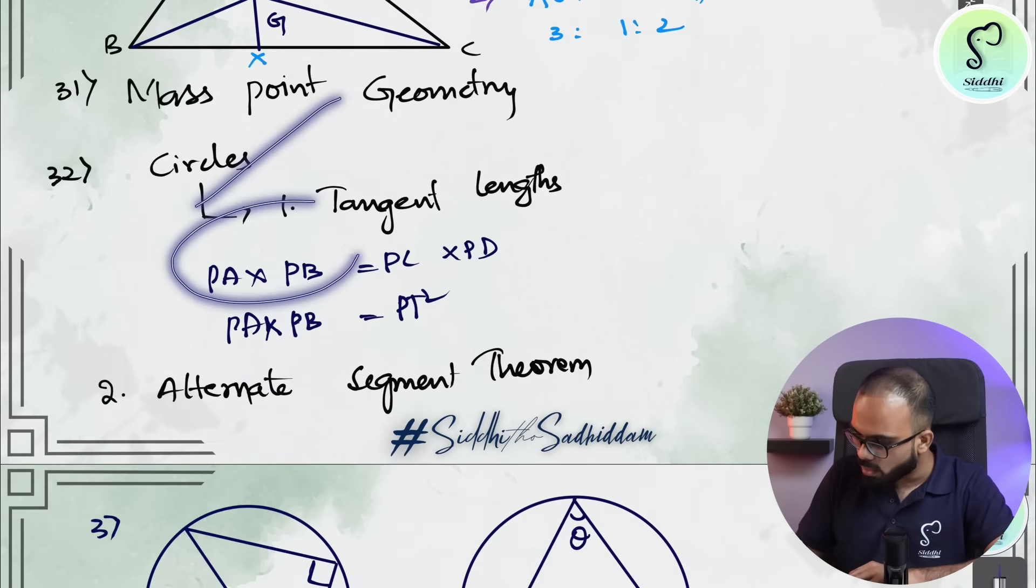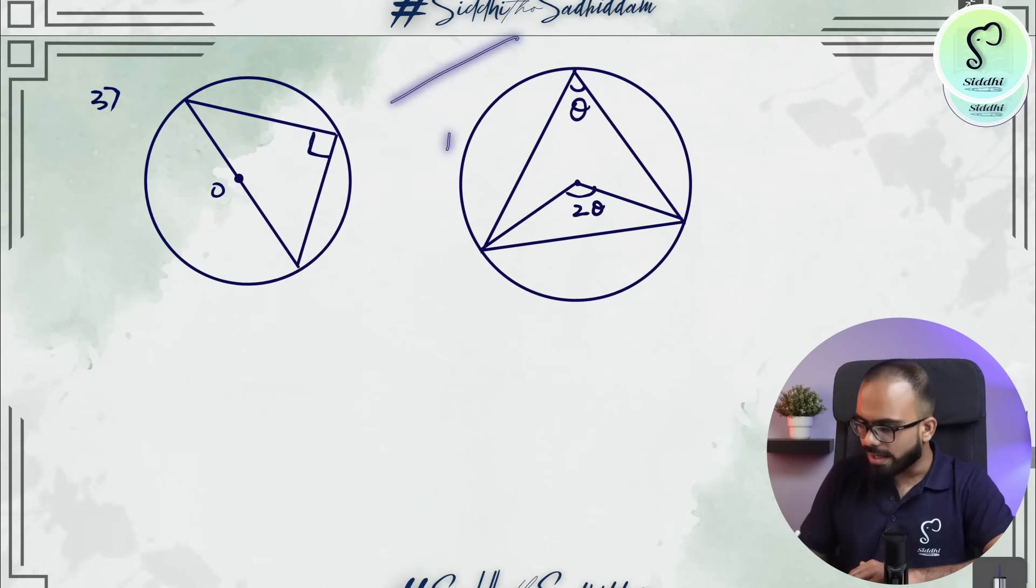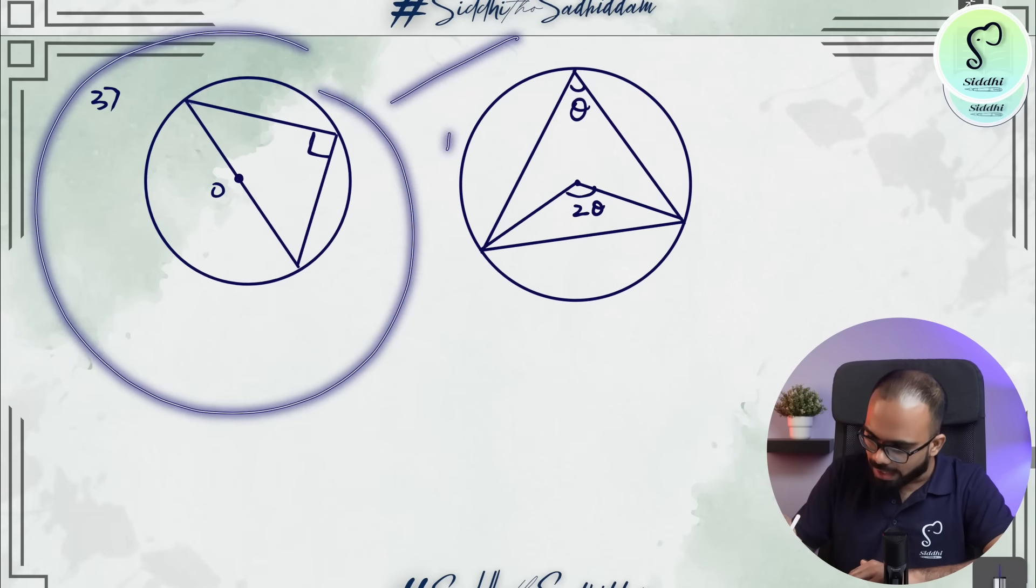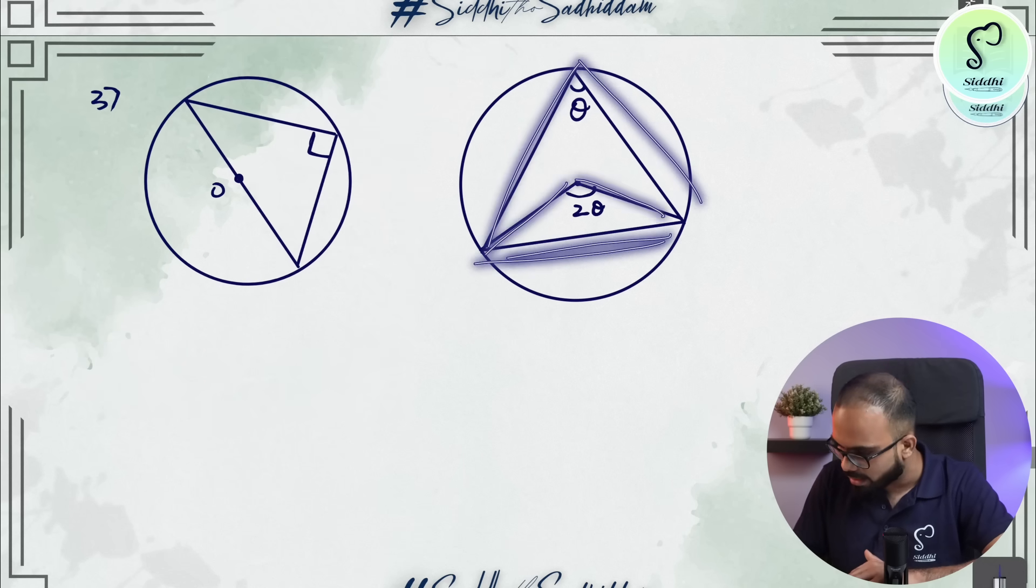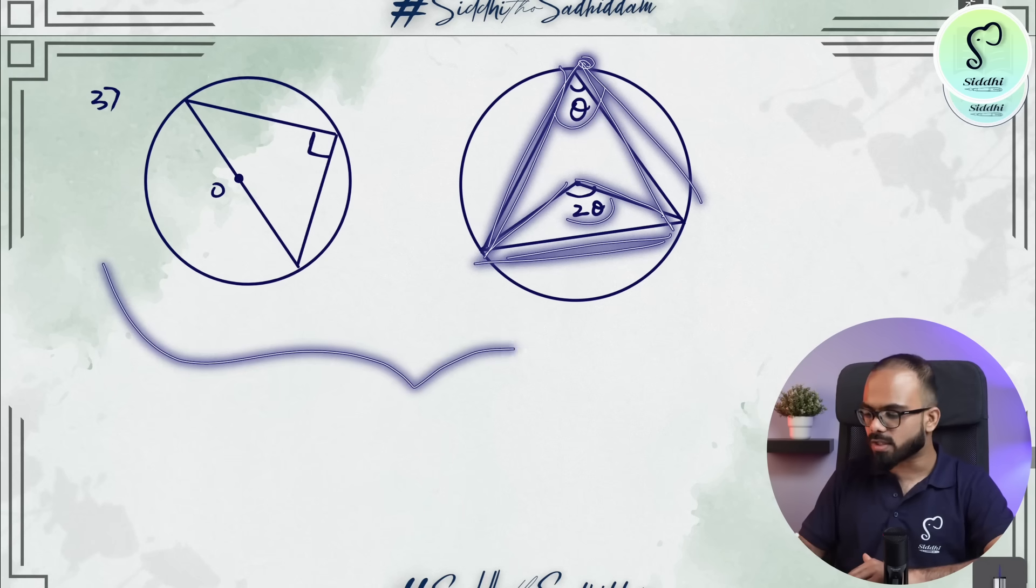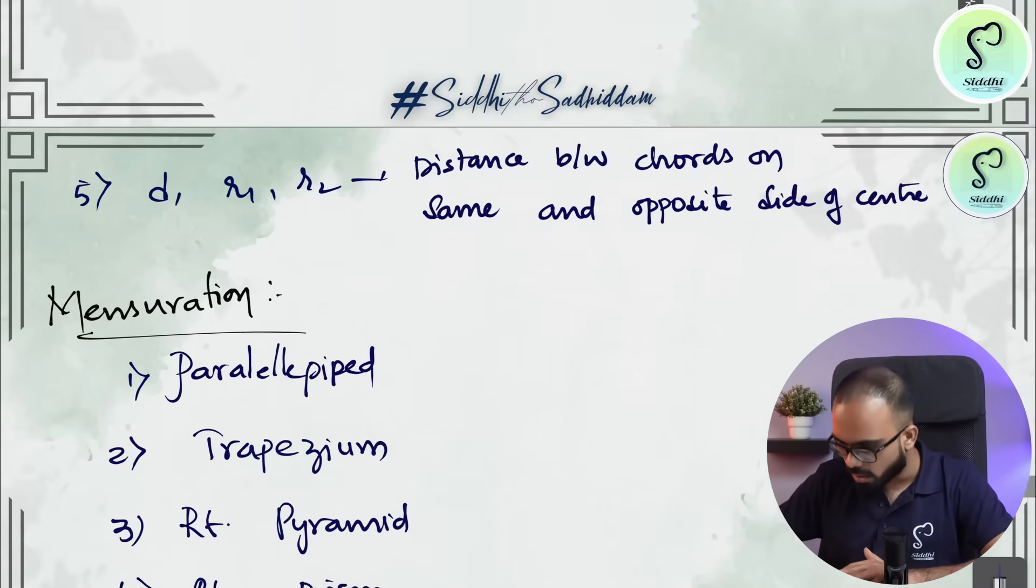In circles, PA into PB is equal to PC into PD, PA into PB is equal to PT square. Alternate segment theorem. And the theorems where the angle subtended by a diameter at any point on the circle is 90 degrees. And this theorem where the angle subtended by a chord at the center is 2 theta. Then the angle subtended at the circumference is theta.